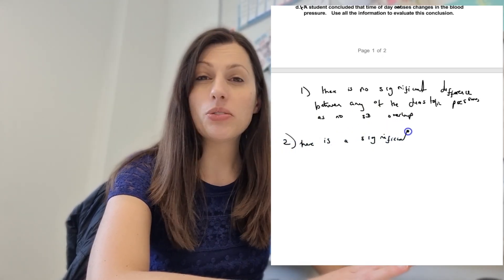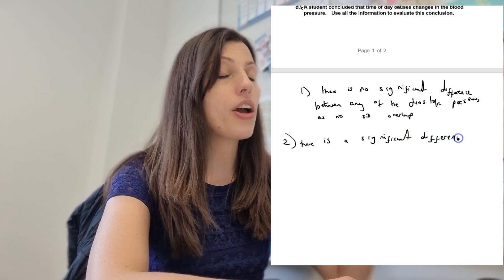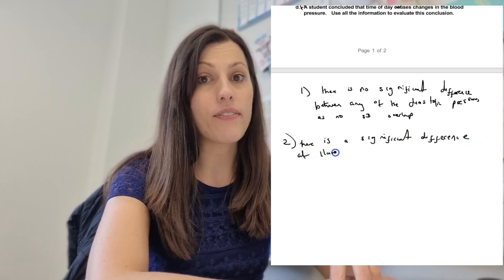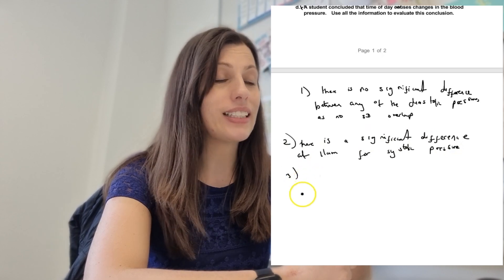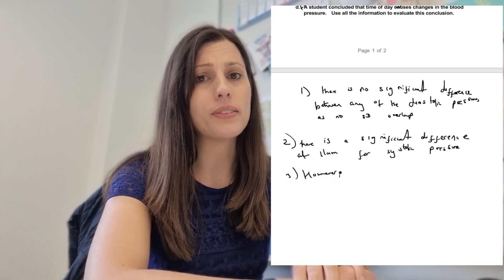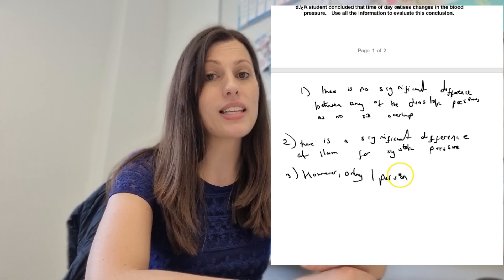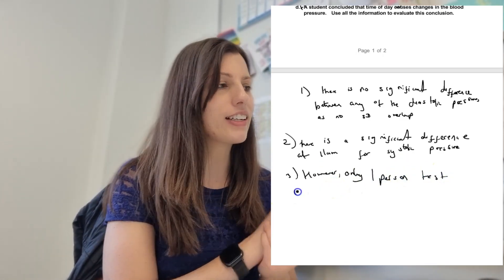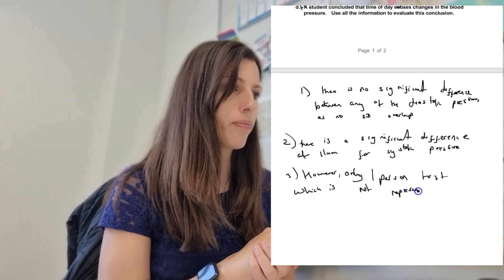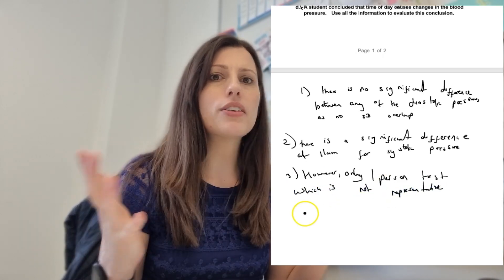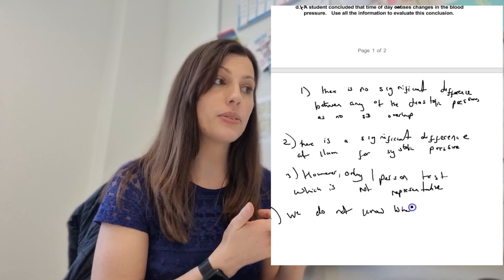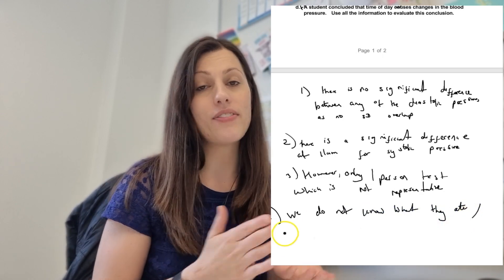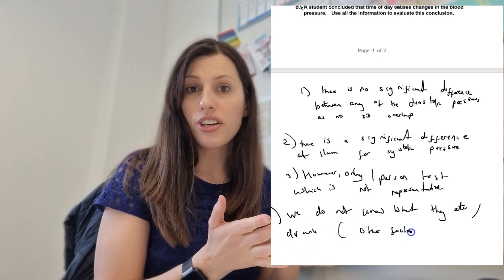For the systolic pressure, there is only a significant difference at 11am. However, thinking about the method: there was only one person tested, and that is not representative of the whole population — in this video, that was me. We also don't know what they were doing on those 30 days; we don't have any details on what they might have eaten or how much liquid they drank, and both of those factors have an impact on blood pressure. So we don't know if the changes seen are definitely due to the time of day or any other factor.